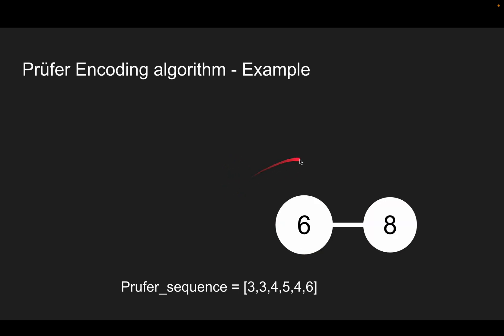After six iterations, we get the Prüfer sequence of length 6. And this is the result.